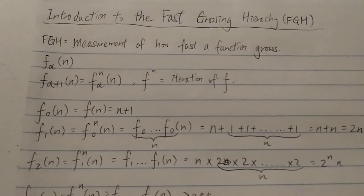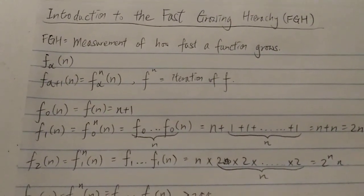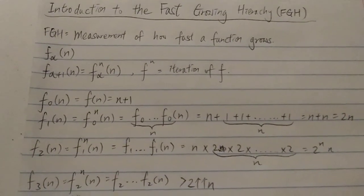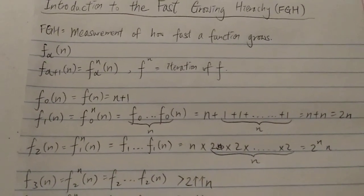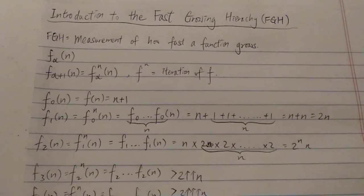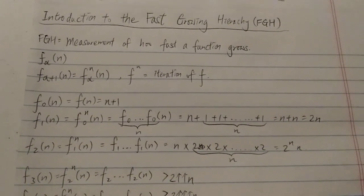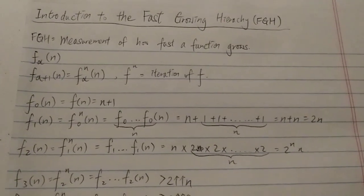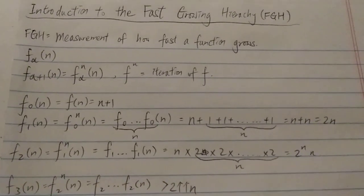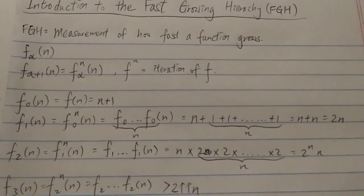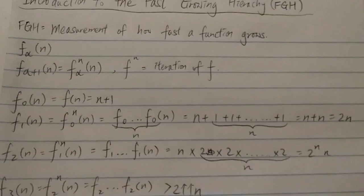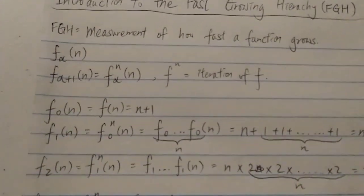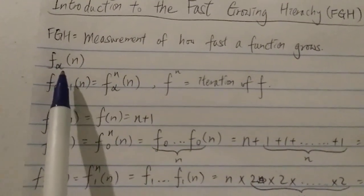It's similar to when you want to measure distance, you use a ruler or a measuring tape. For weight, you want to use a balance or a scale. And for fast-growing functions, you use the fast-growing hierarchy.